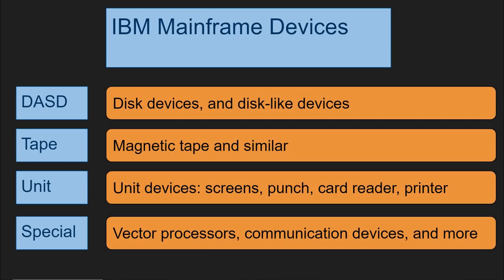Hello everybody and welcome back to the Moshix mainframe channel. This is Moshix. Today I start a very short mini-series of maybe two or three videos where I talk about the devices and peripherals that go into the IBM line of mainframes — the S360, S370, ESA, and descendants.